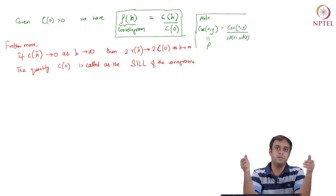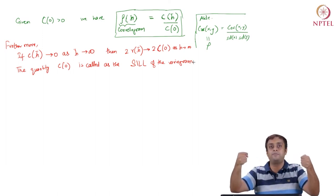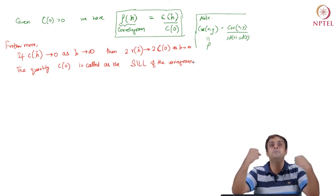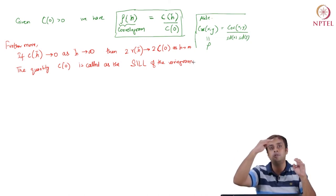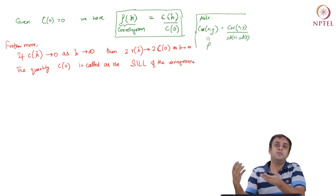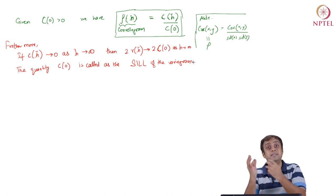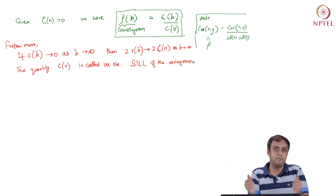What the covariogram property tells us is that as we move far enough apart, the data will not be related to each other — they will be random with respect to each other. Spatial dependence will fall as we increase H, eventually diminishing to 0. At that point, the variogram measure becomes a constant equal to C(0), which represents the large-scale, overall variation in the data.